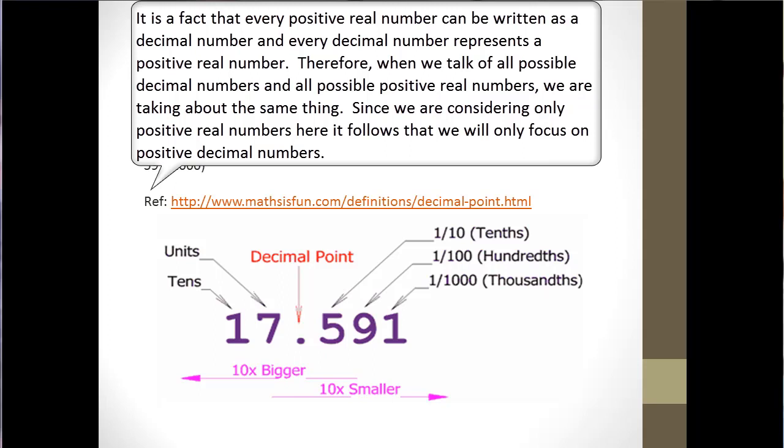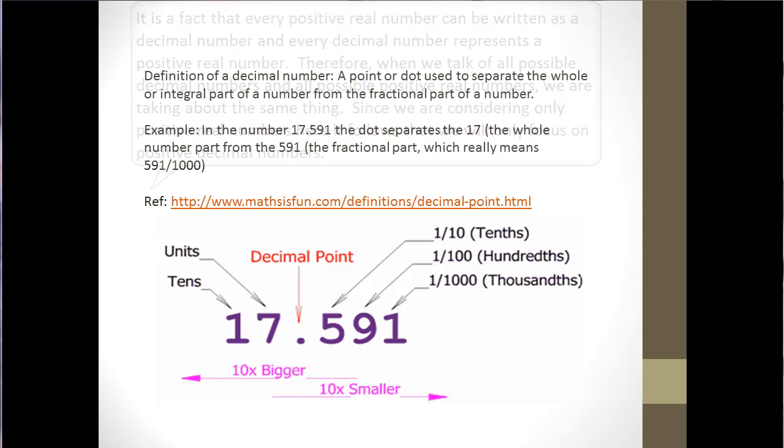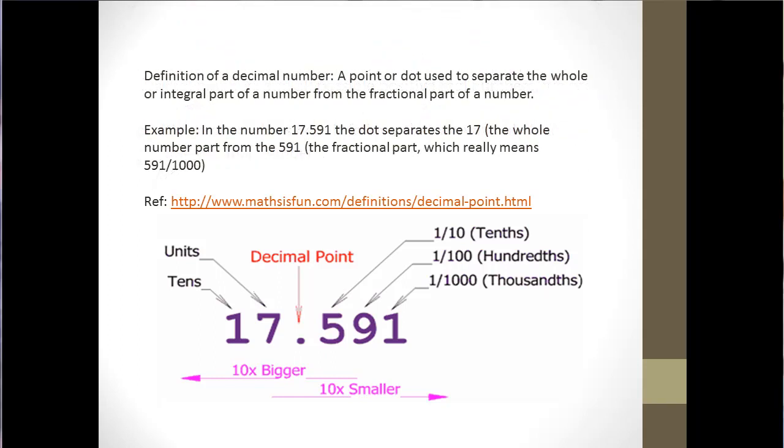Since we are considering only positive real numbers here, it follows that we will only focus on positive decimal numbers. As stated on the screen, the definition of a decimal number is a point or dot used to separate the whole or integral part of a number from the fractional part of a number.